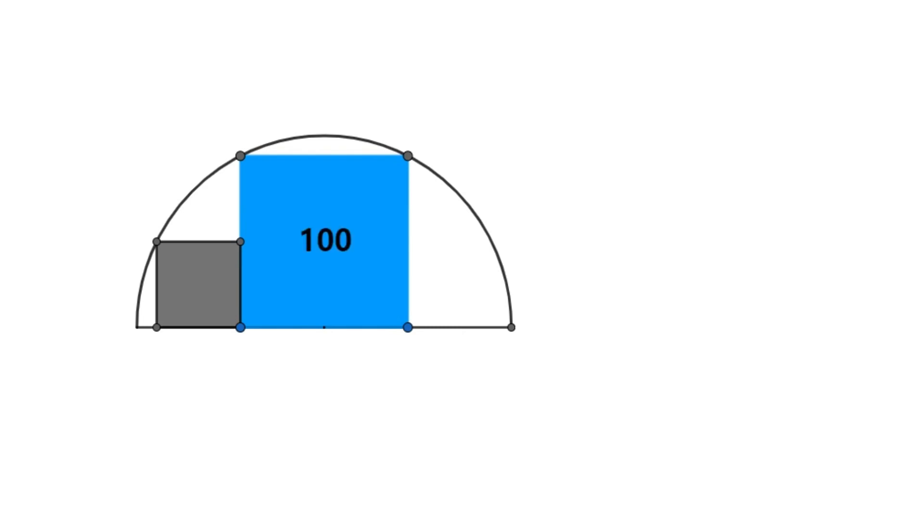We know that the area of the blue square is 100. So, what is the area of the grey square?